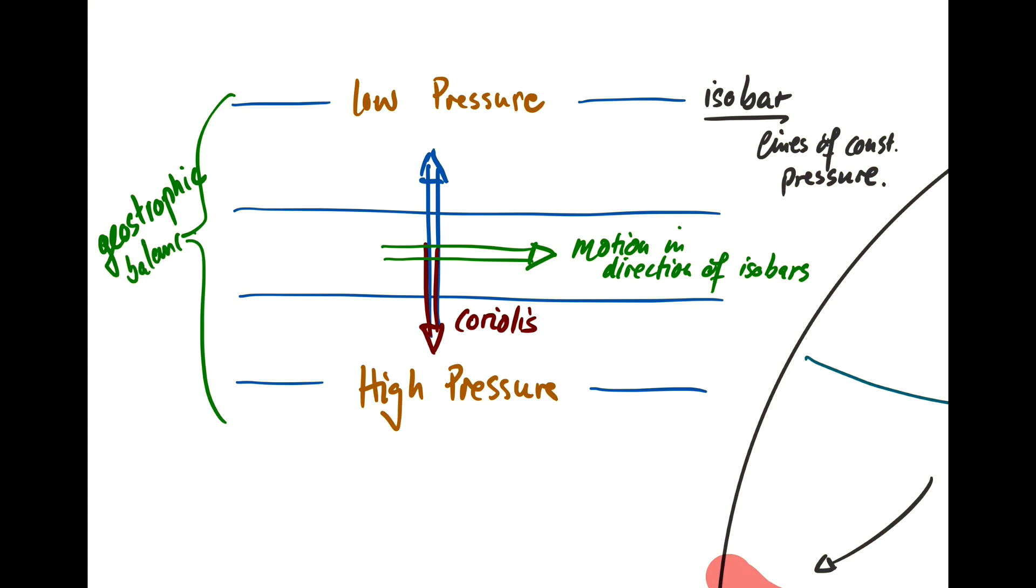And in reality, you don't typically achieve perfect Geostrophic Balance because there's other effects like friction, etc. But in many cases, the main dominant forces are the Coriolis and the pressure gradient force.